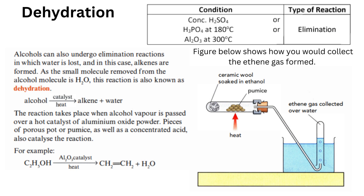The next reaction is dehydration. The type of reaction is elimination. Conditions required: concentrated sulfuric acid or H3PO4 at 180°C, or Al2O3 at 300°C. Alcohols undergo elimination reactions in which water is lost and alkenes are formed. Since the small molecule removed is water, this reaction is also known as dehydration. Alcohol in the presence of catalyst and heat gives alkene and water. The reaction takes place when alcohol vapour is passed over a hot catalyst of aluminium oxide powder. Pieces of porous pot or pumice, as well as concentrated acid, also catalyse the reaction. For example, ethanol in the presence of aluminium oxide catalyst and heat gives ethene and water. The ethene gas formed is collected over water.